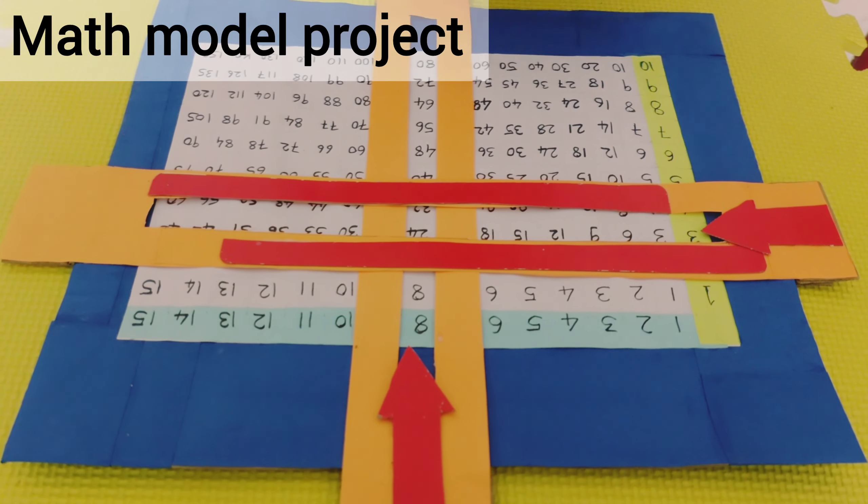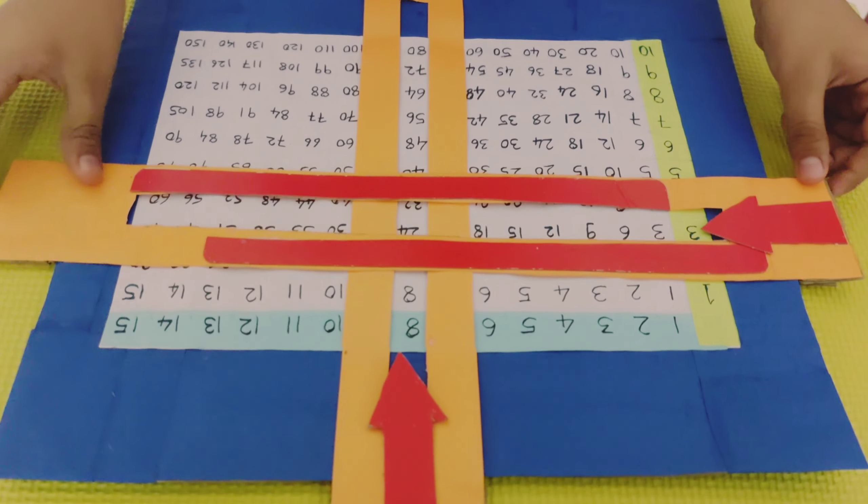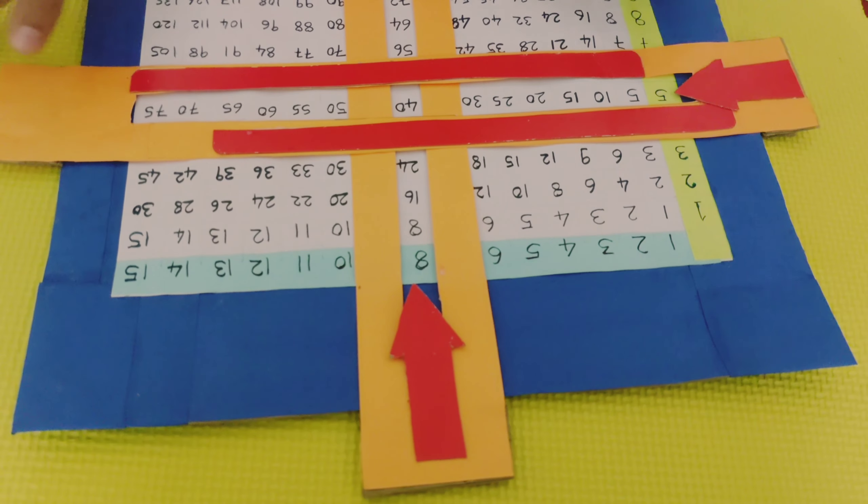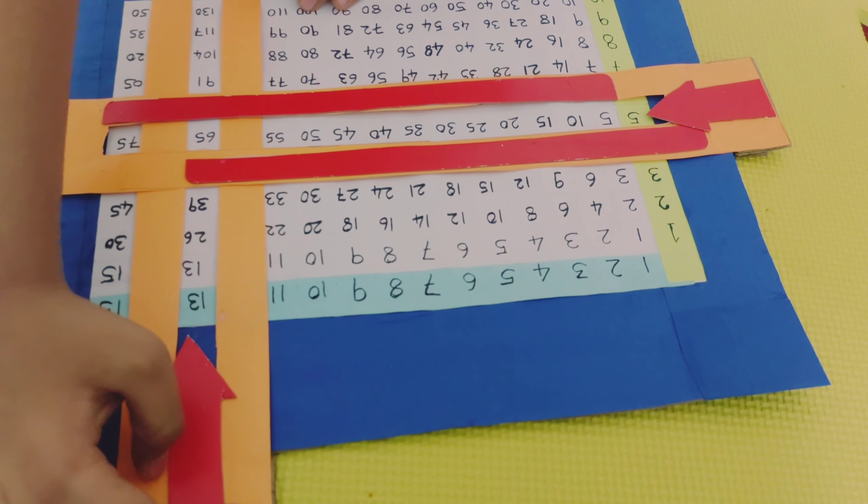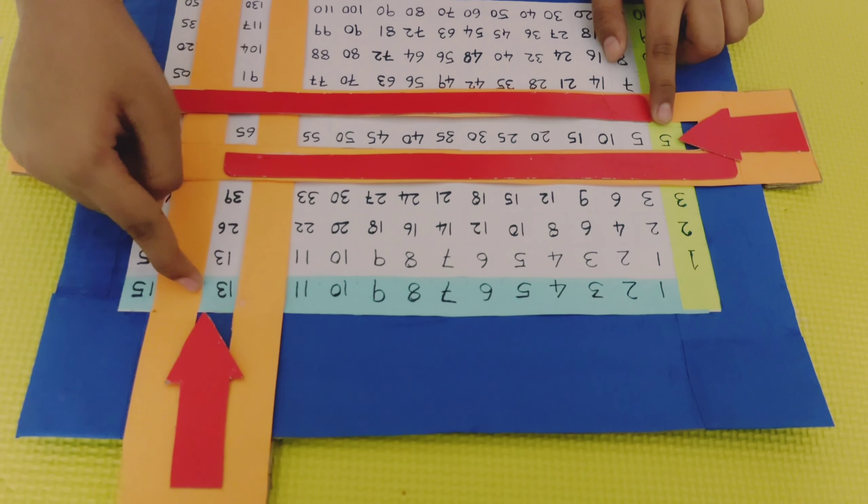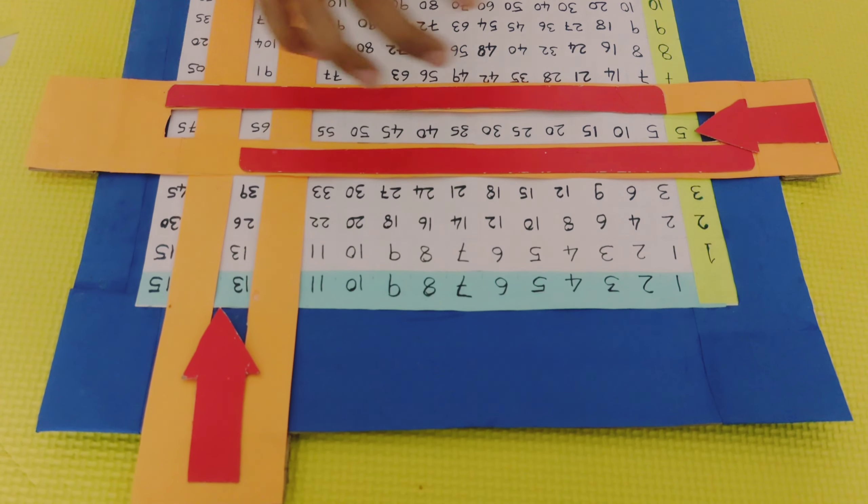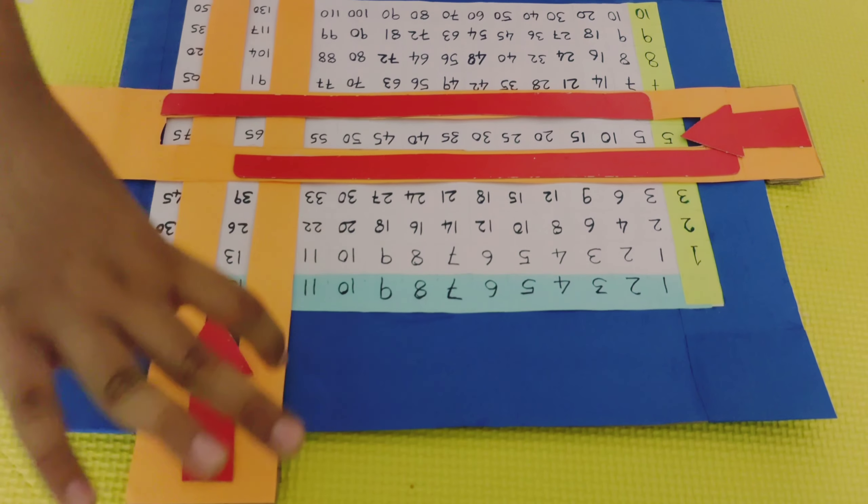So I will show you an example. 5 times 13. So this is 5 times 13. The answer is 65. It's in the middle of this stripe and this stripe, right here.